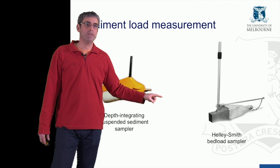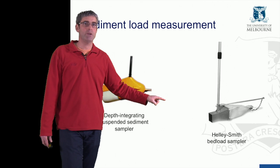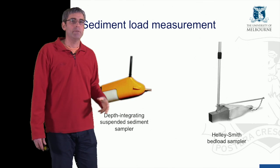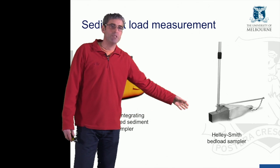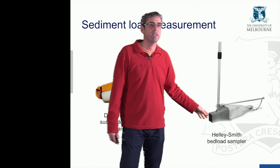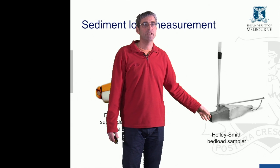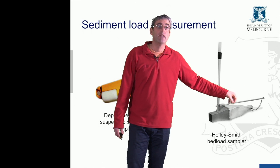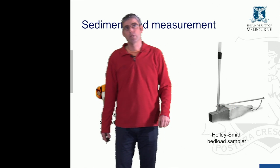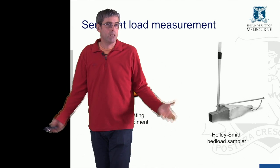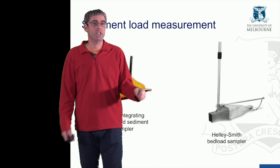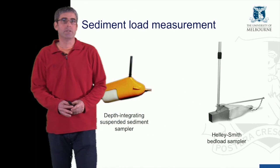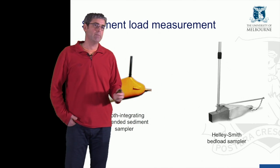Over here we have a bed load sampler - it's a Heli-Smith bed load sampler. Again, it's on a large rod, which is placed right on the bed of the channel. The material moving along the bed of the channel moves in through the metal hole at the front and gets caught in the bag at the back, which is a mesh, so water can flow through, but the bag holds the coarse material. You measure how long you're sampling the bed load for and know what the area of the face is, so you can work out what the bed load transport rate is.